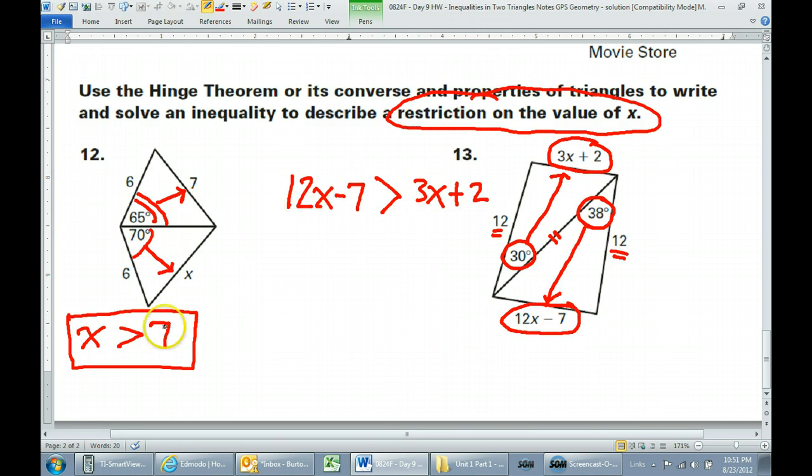Now this, we can go ahead and solve. Number 12, it was already by itself. X was already by itself. This will solve.